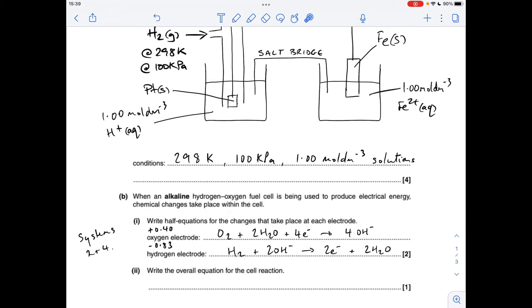Part B, we had to choose systems two and four because it was the alkaline hydrogen-oxygen fuel cell. So I've written up the standard electrode potential values for each electrode. Because the oxygen electrode has the more positive standard electrode potential, its half equation will run left to right, so as it appears on the table.